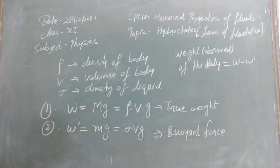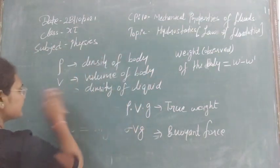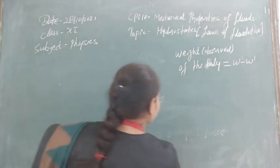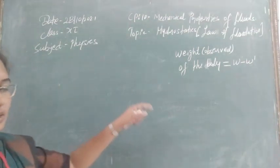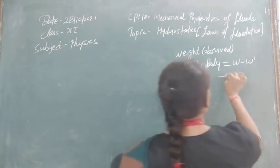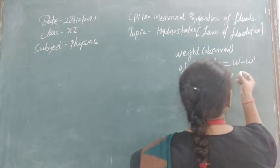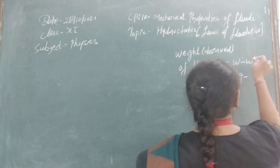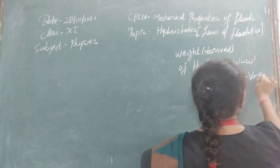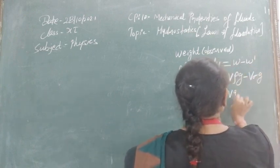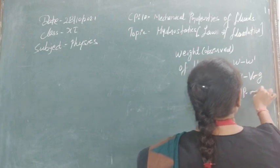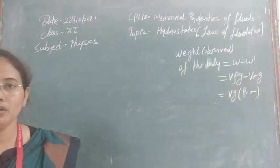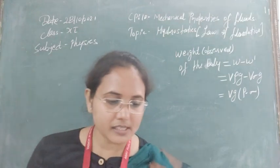Now we can have three cases. By the equation, observed weight W_obs equals V·g·(rho − sigma). From this expression, three cases are possible.